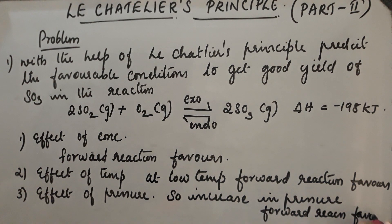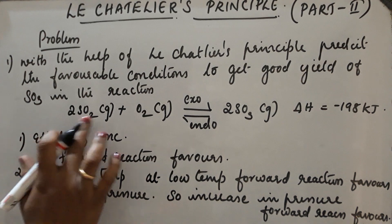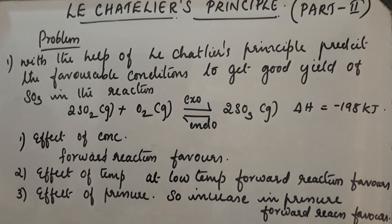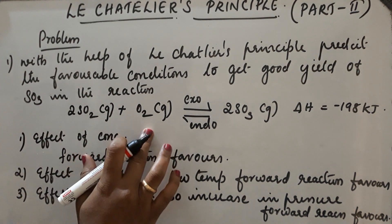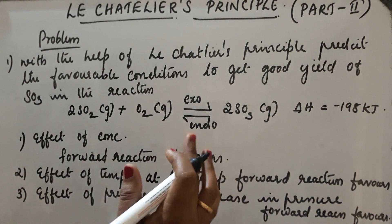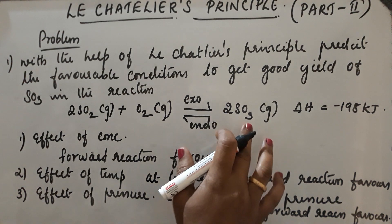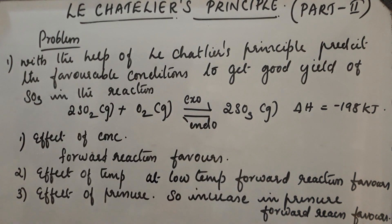We can conclude that in order to get better yield of SO₃, we have to increase the concentration of reactants, maintain the reaction at optimum (low) temperature, and at high pressure. These conditions will give a better yield of SO₃.